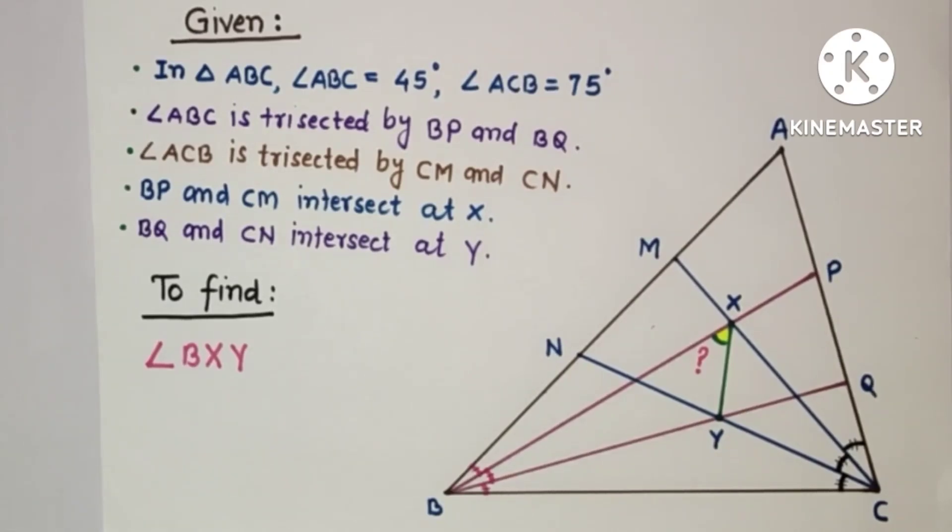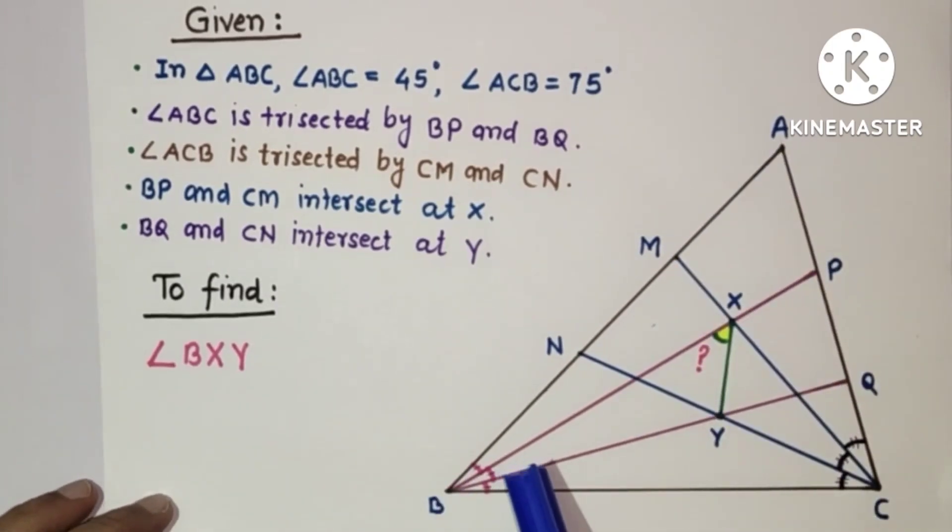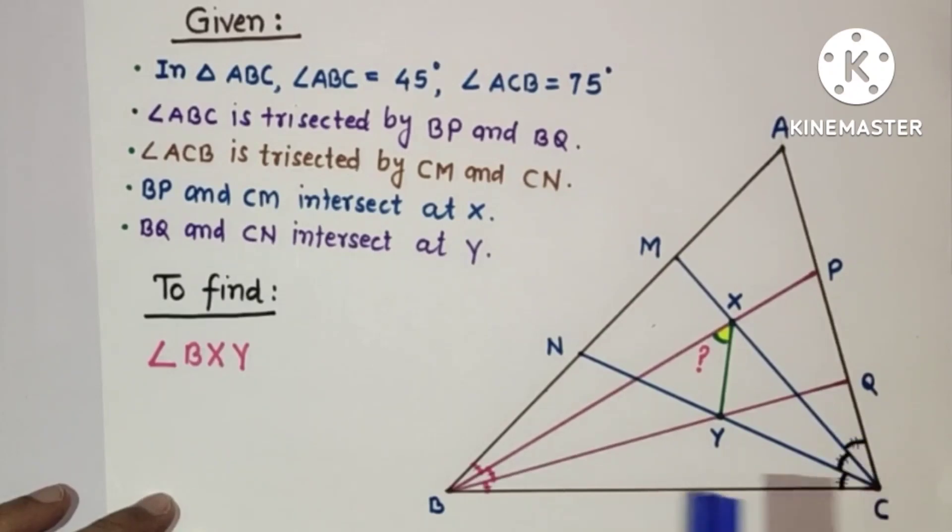In this problem we are given a triangle ABC in which angle ABC is 45 degrees and ACB is 75 degrees. This angle B is trisected by BP and BQ and this angle C is trisected by CN and CM.